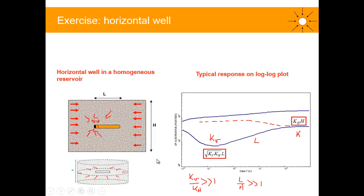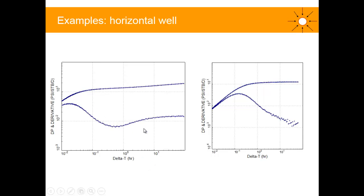Okay, let's have a look at some examples of horizontal well. So we have shown you the sort of two extremes. This is looking at the sort of ideal horizontal well with vertical radial flow regime, linear flow, and horizontal radial flow regime.